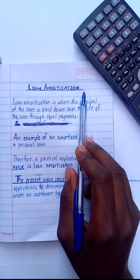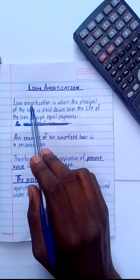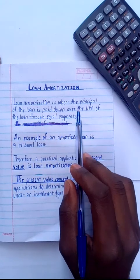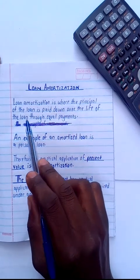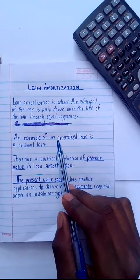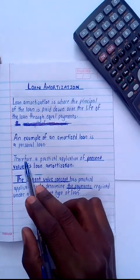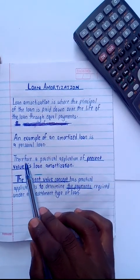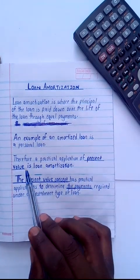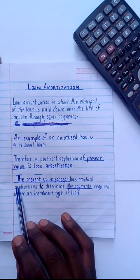So what is loan amortization? Loan amortization is where the principal of the loan is paid down over the life of the loan through equal payments. An example of an amortized loan is a personal loan.